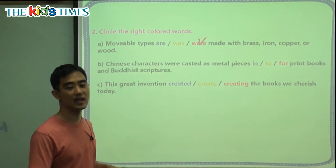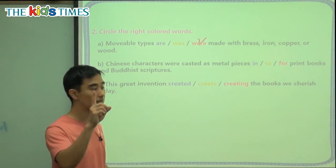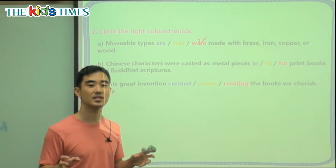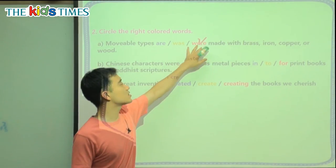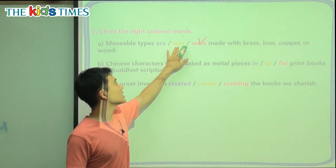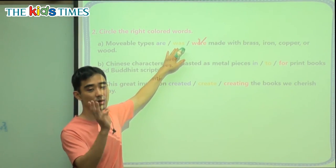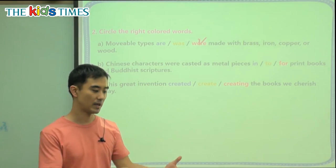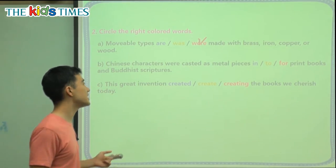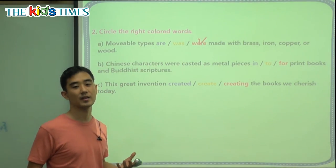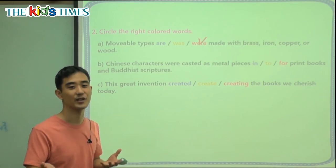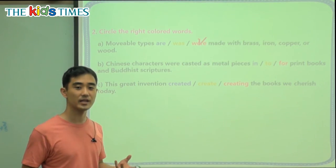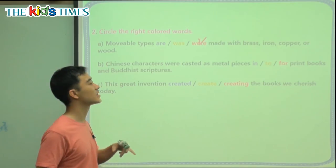Question B: Chinese characters. We're not talking about a movie character like Po from Kung Fu Panda. A Chinese character means the letter or word they use — you might know it as Hanja, which is Chinese characters. Casted: remember, casted is when we have a shape, and — like making ice — we have a little plastic mold, we put water in and it freezes, and we can take the ice out. We call this a cast.